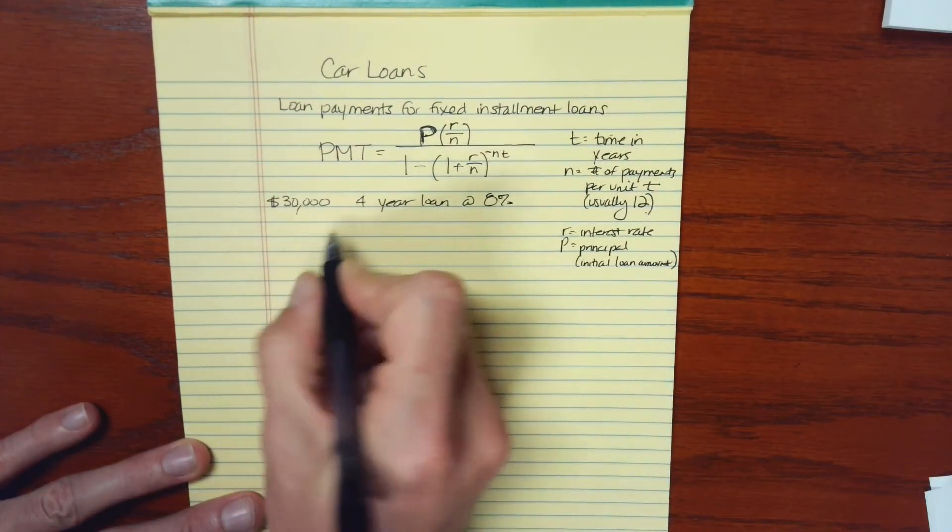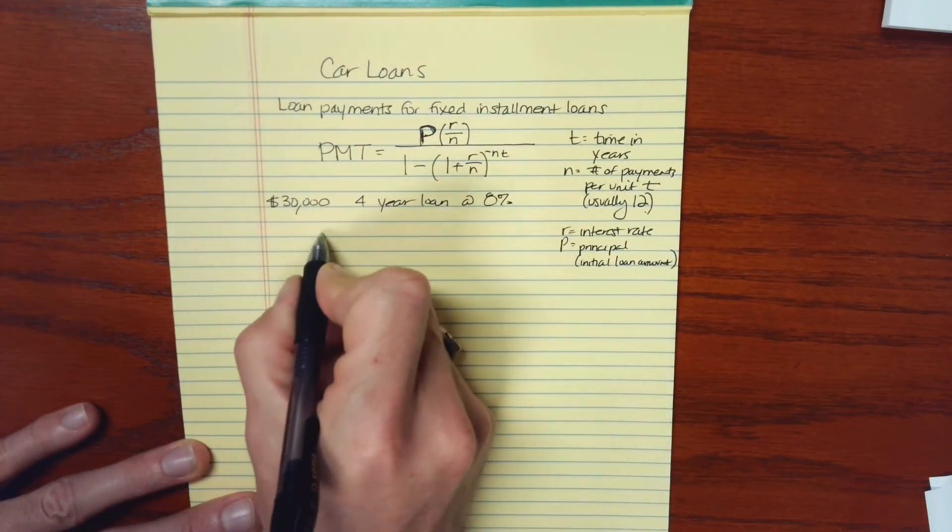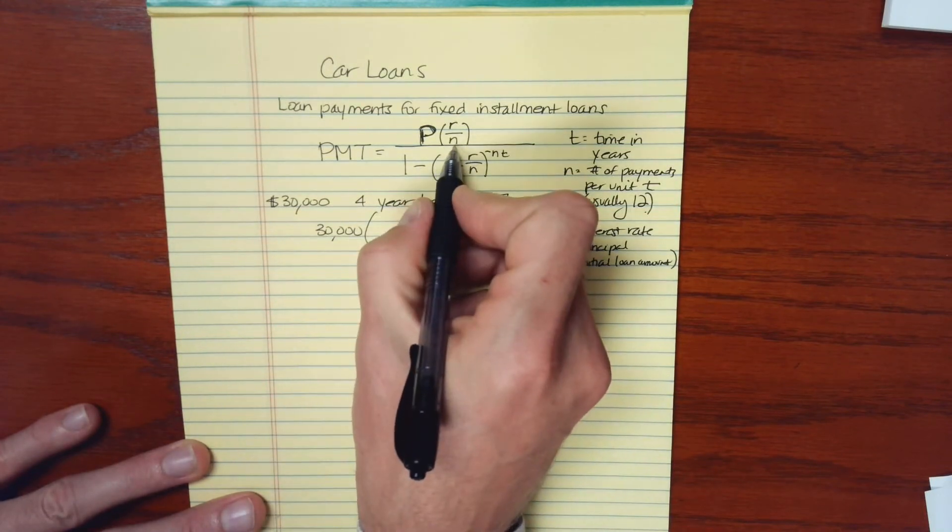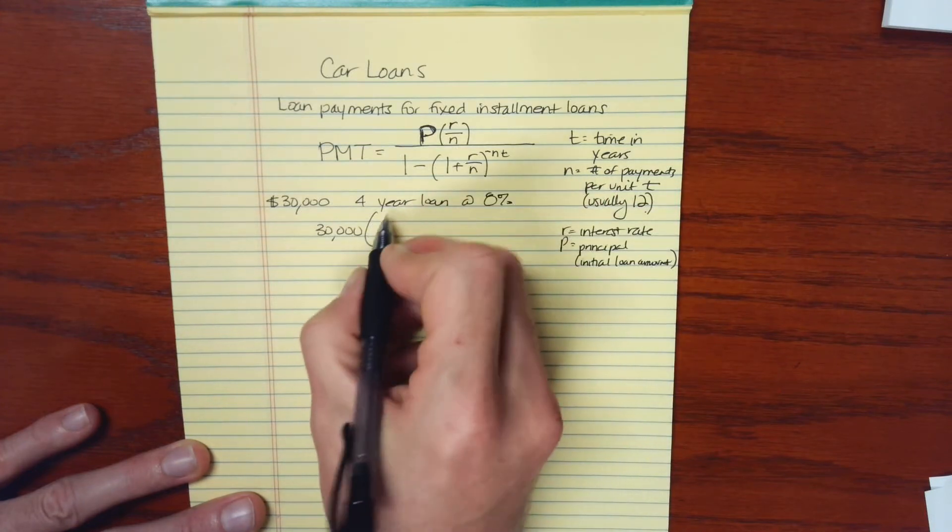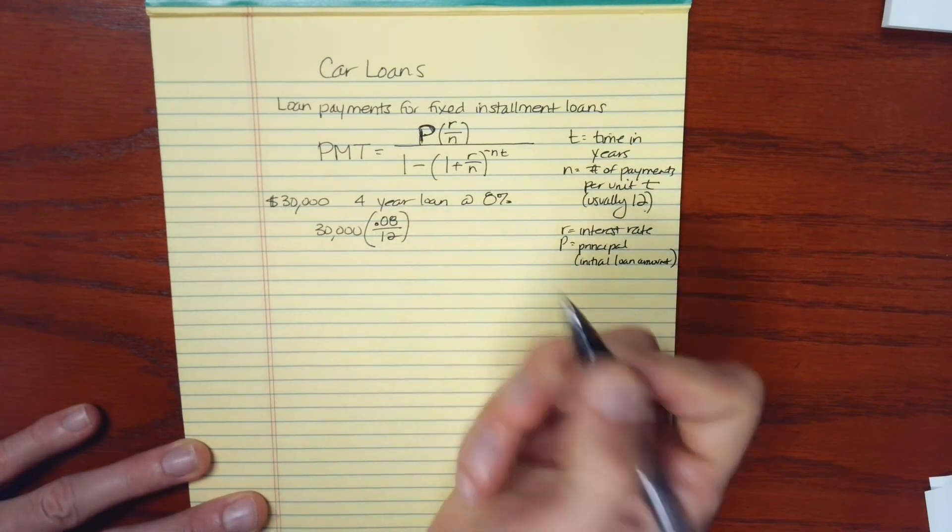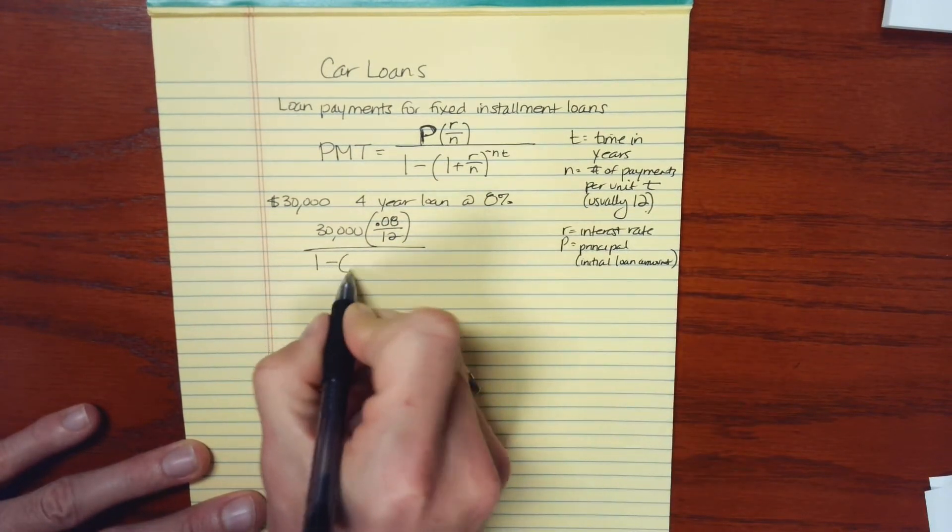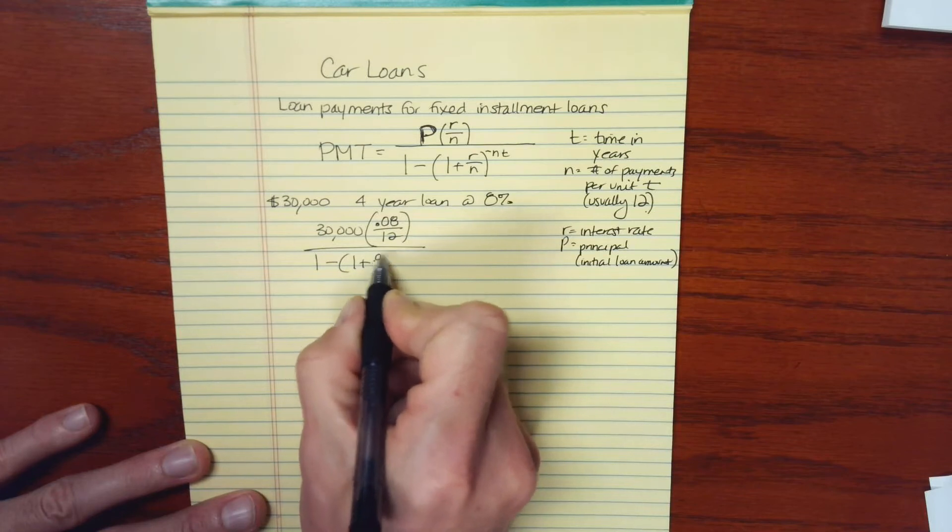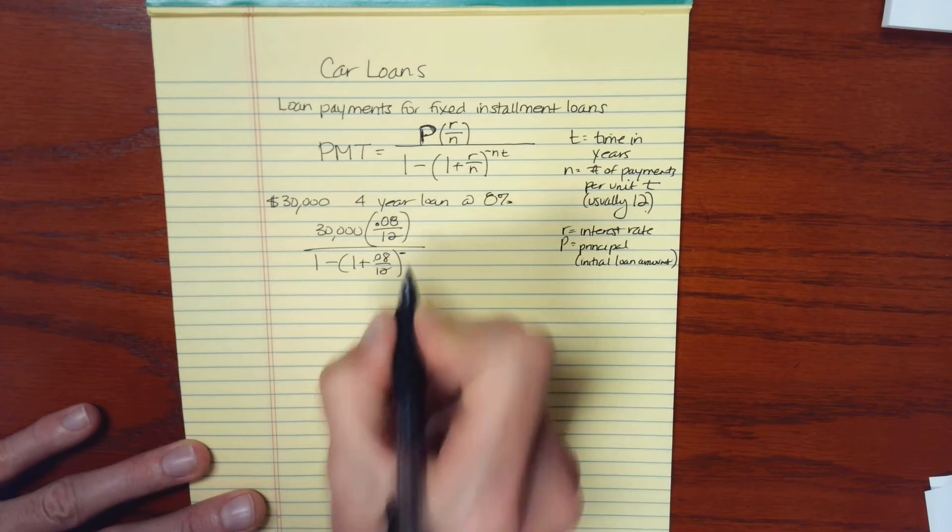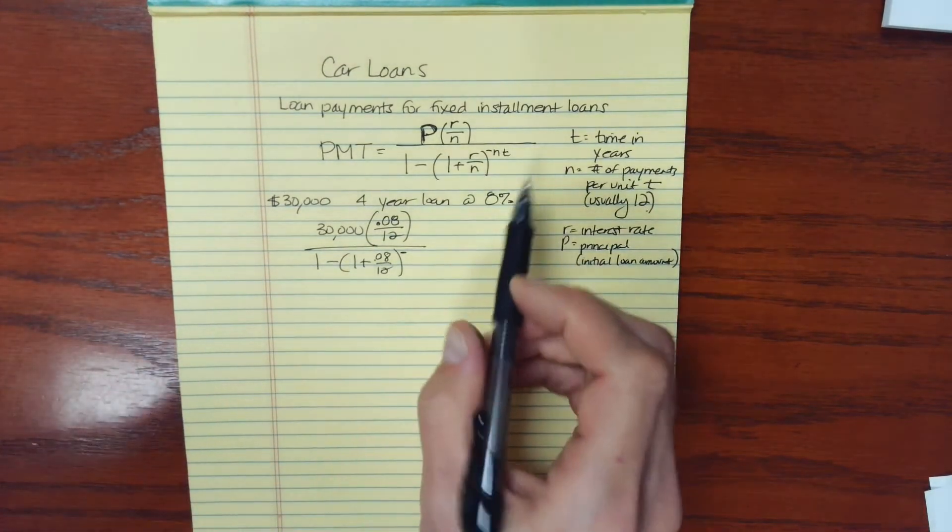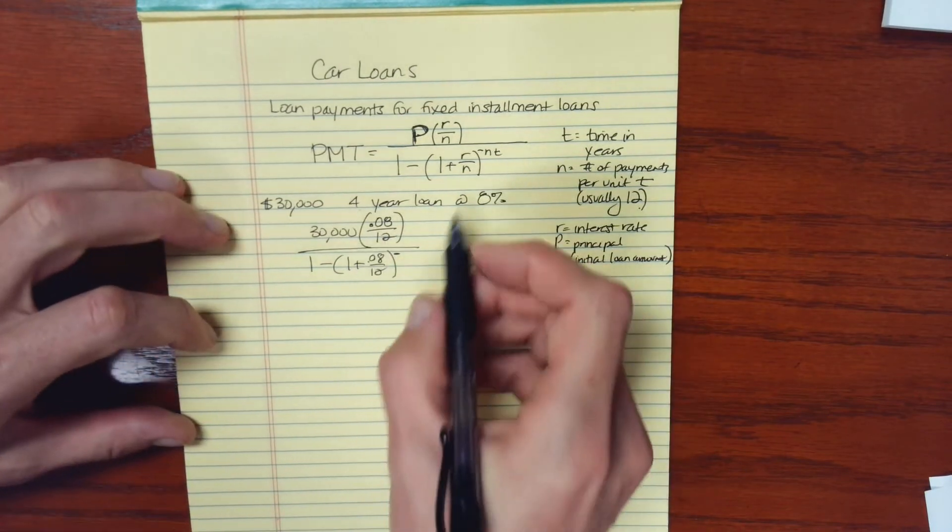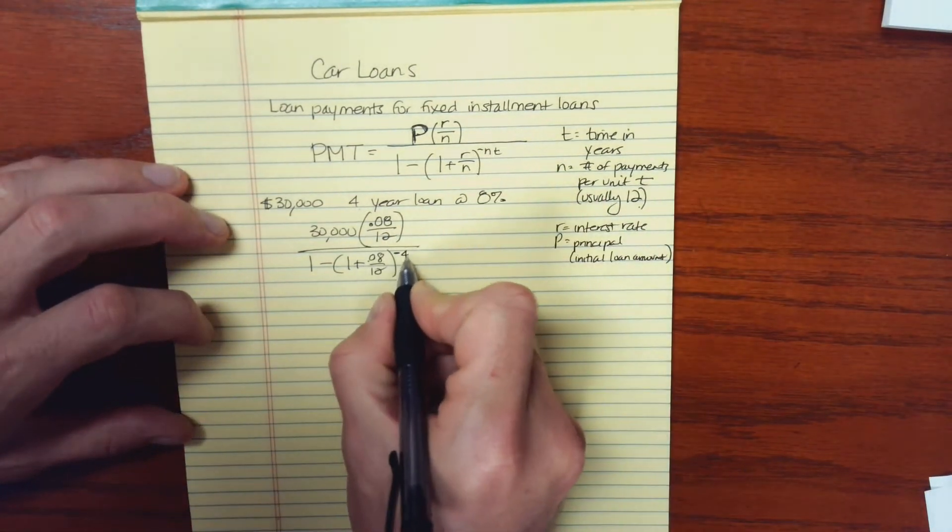So to figure that out, I'll take the principal, which is the $30,000, multiply it by the rate over the number of payments per time period. So the rate is 8%. So that's 0.08. There are 12 payments in the year. And this is over 1 minus, 1 plus, 0.08 over 12 again. And then this is key. It's minus N times T. So this is a four-year loan. Four years, 12 payments a year. N times T is 48.